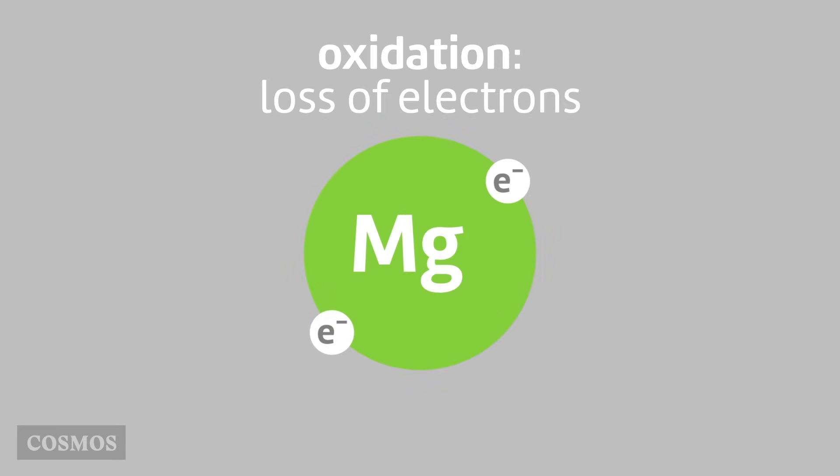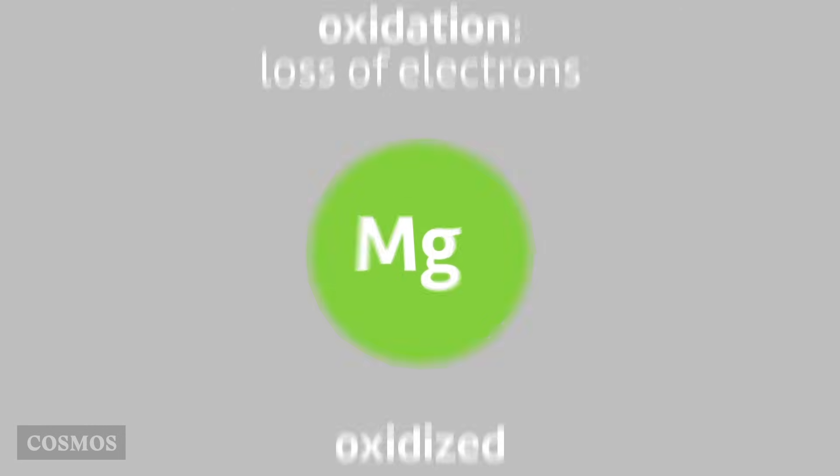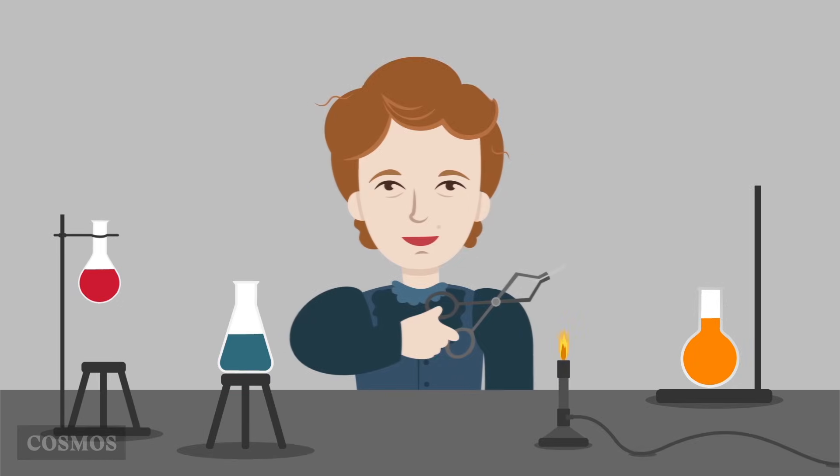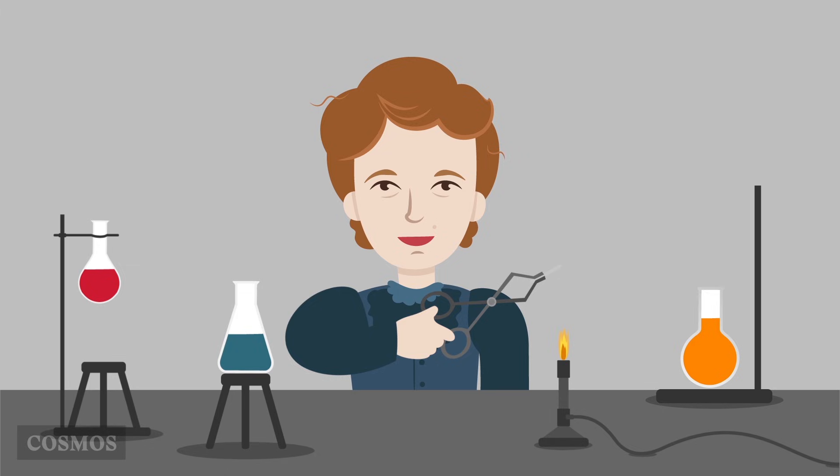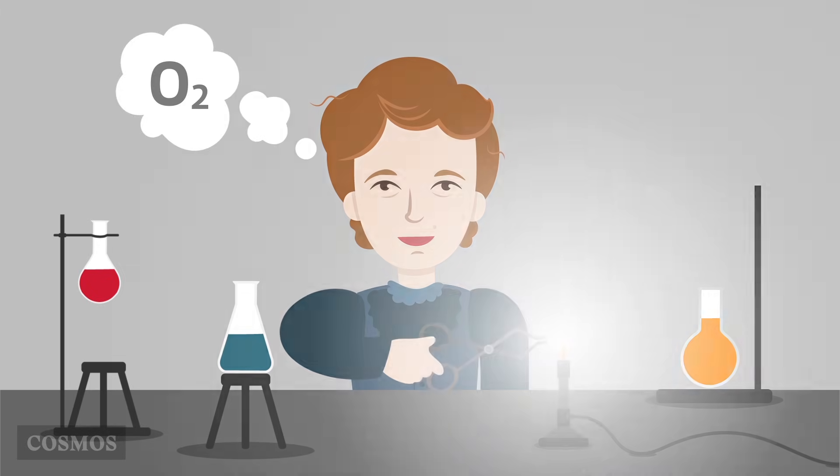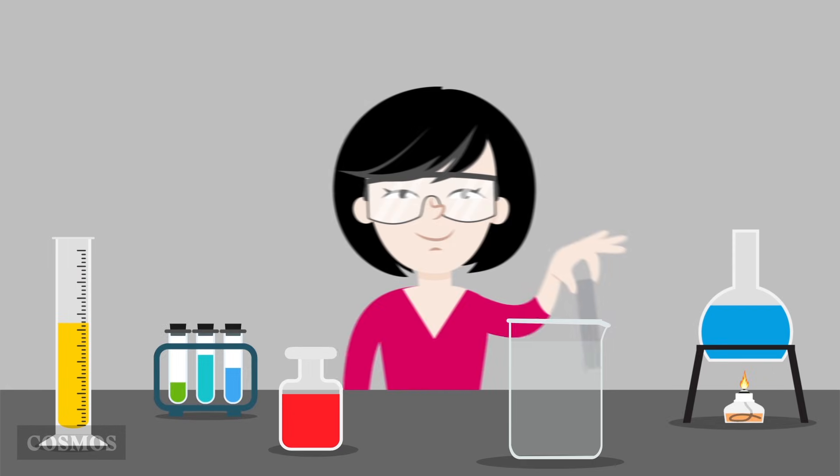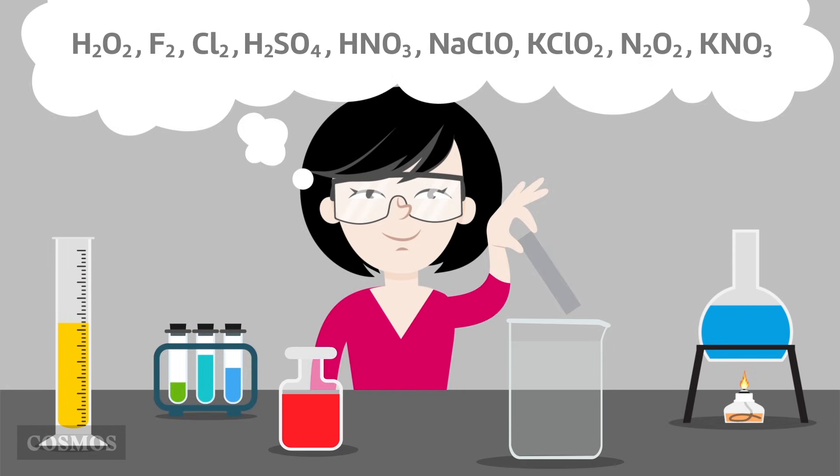Oxidation is the loss of electrons, so in this reaction the magnesium has been oxidised. Historically, the only oxidation reactions that scientists knew about all involved oxygen. That's why they called them oxidation reactions. But now we know plenty of oxidation reactions that don't involve oxygen.